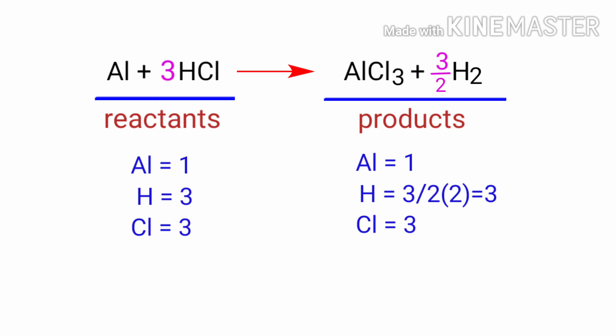In this equation, three by two is a rational number. We don't use rational number to a molecule. To get whole number, we need to multiply the equation by a coefficient of two.